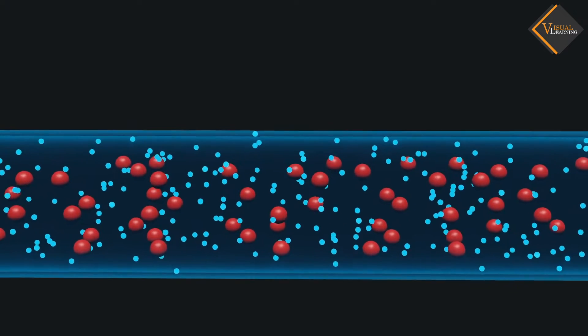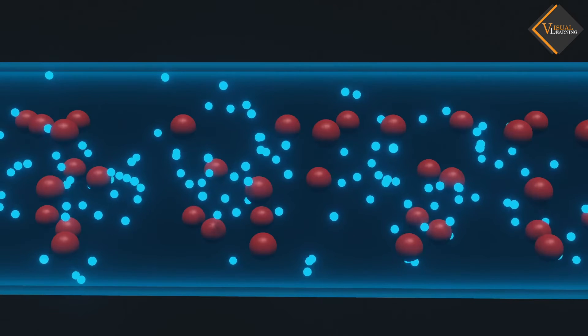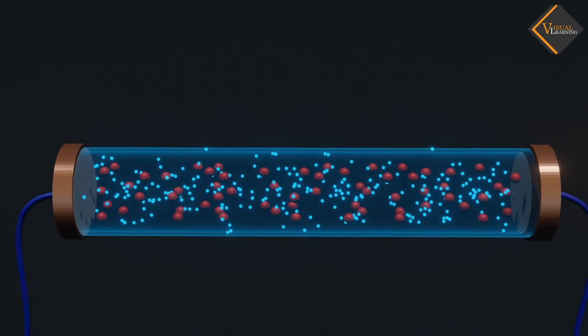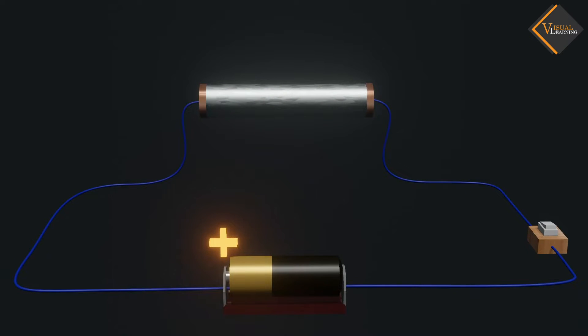But these electrons do not move by themselves. Now, consider that we connect one end of the conductor to the positive terminal of a battery and another end to the negative terminal of the battery.